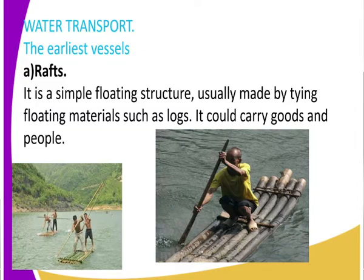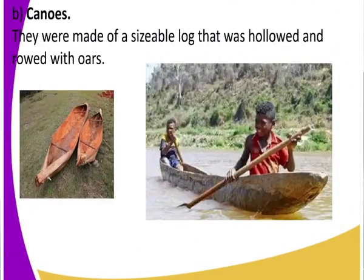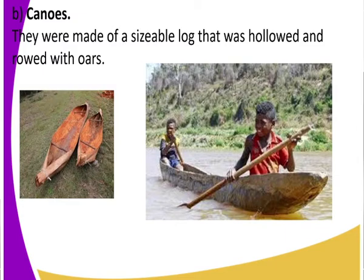They didn't use only rafts — they also had what we call kernels. A kernel is a very common name. Don't confuse the traditional form with the modern form, because we also have kernels in the modern form. The traditional type of kernel was a log that had been hollowed inside — all through. Meaning the inner part of the log has been removed, and space has been created in the log. That is what we call a kernel.